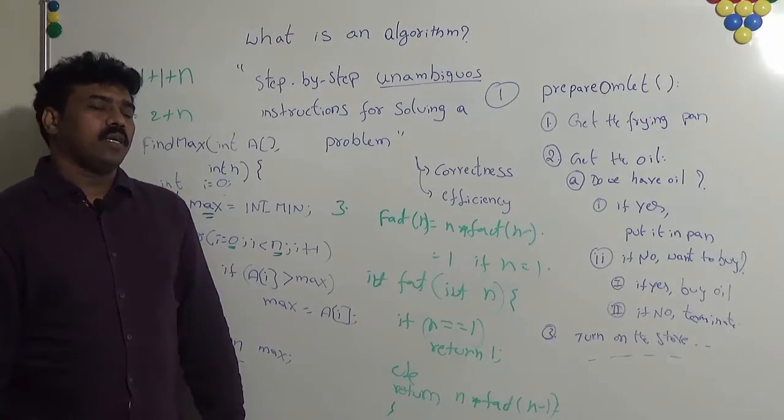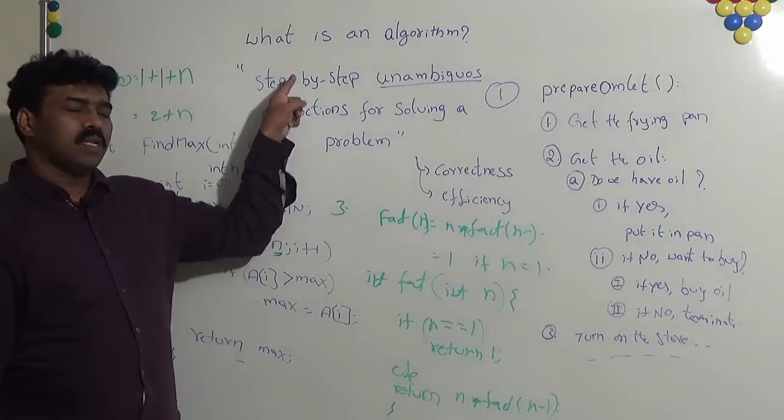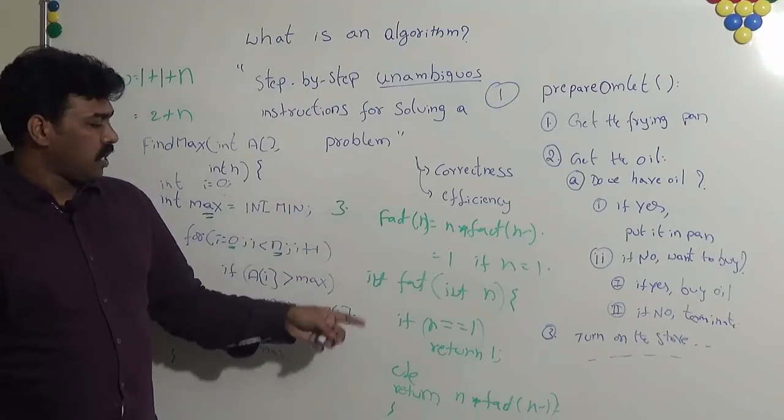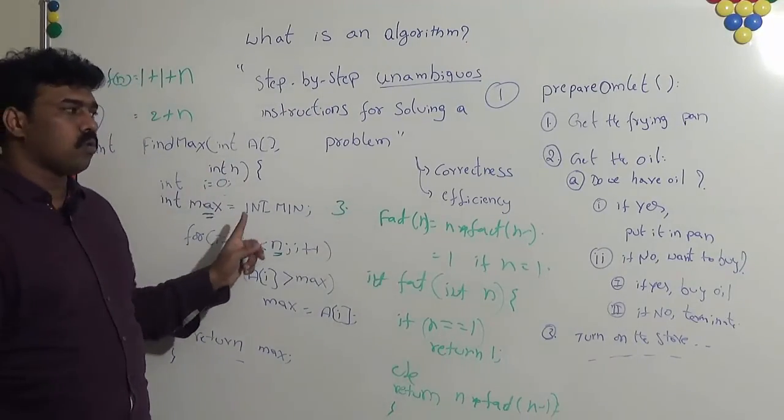Whereas, return n into factorial of n minus 1. Here the important thing that we need to understand is the instructions for solving the given problem, we can represent in terms of functions, we can represent in terms of code, or we can represent in terms of descriptive statements.